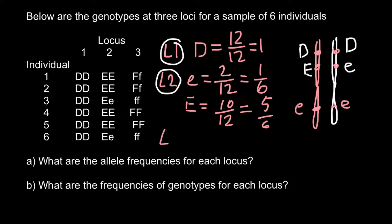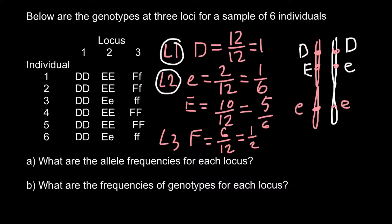At locus three, we also have two alleles: dominant allele F and recessive allele f. Counting the dominant alleles: one, two, three, four, five, six — so 6 out of 12, or one half, for dominant allele F. And recessive allele f is also 6 out of 12, or one half, or 50%.